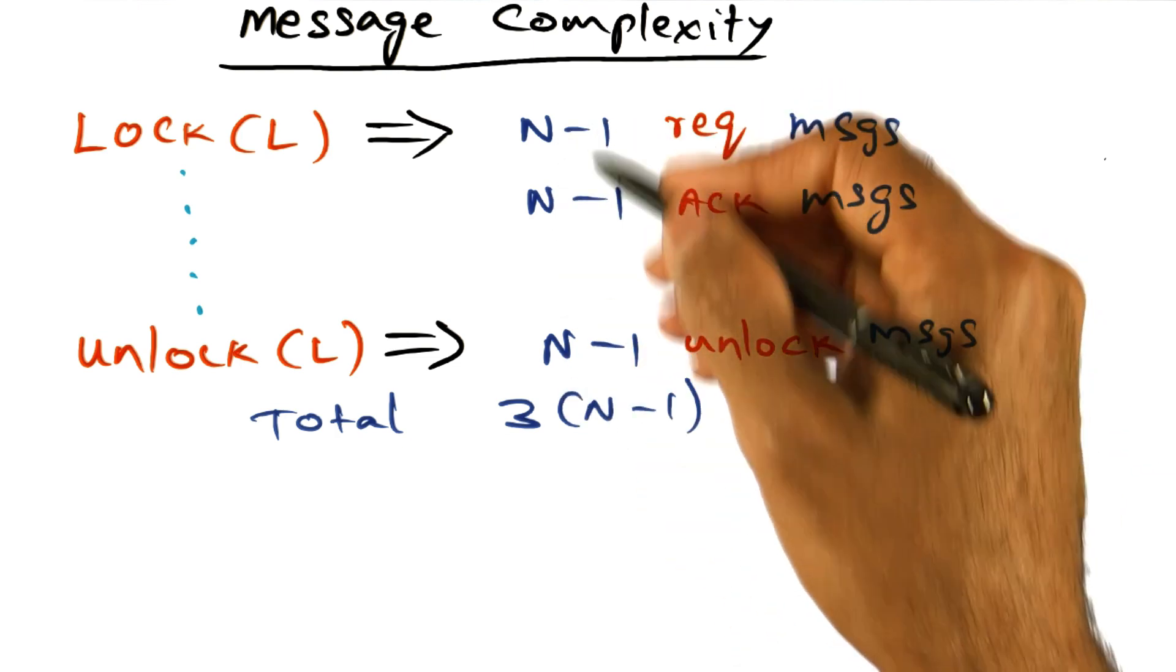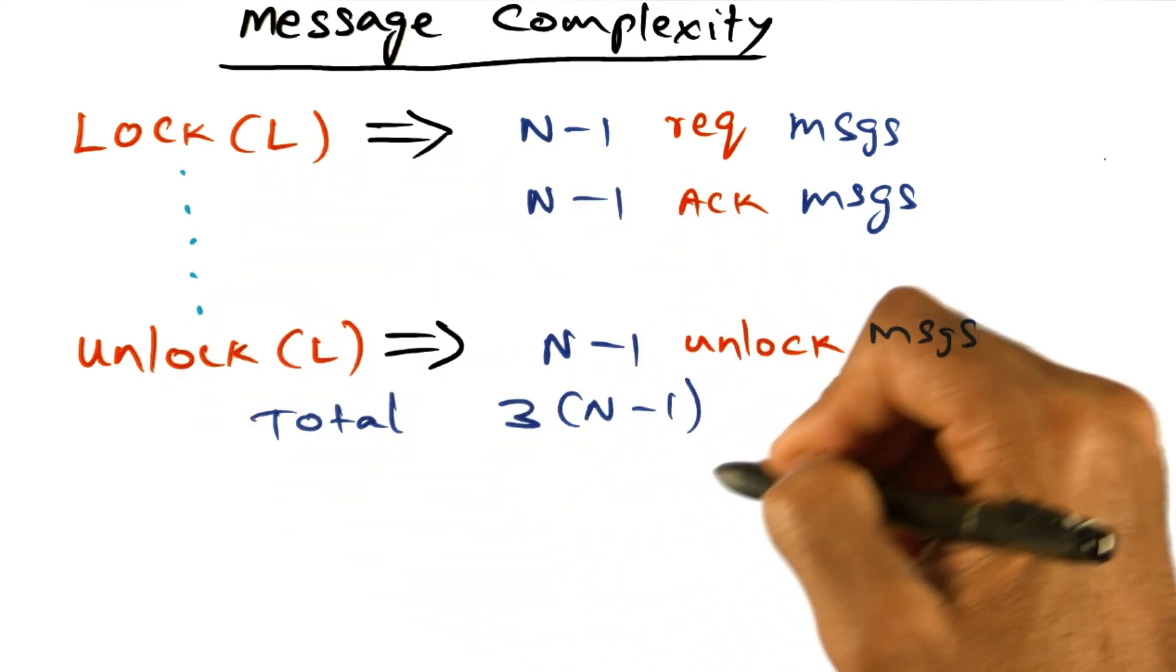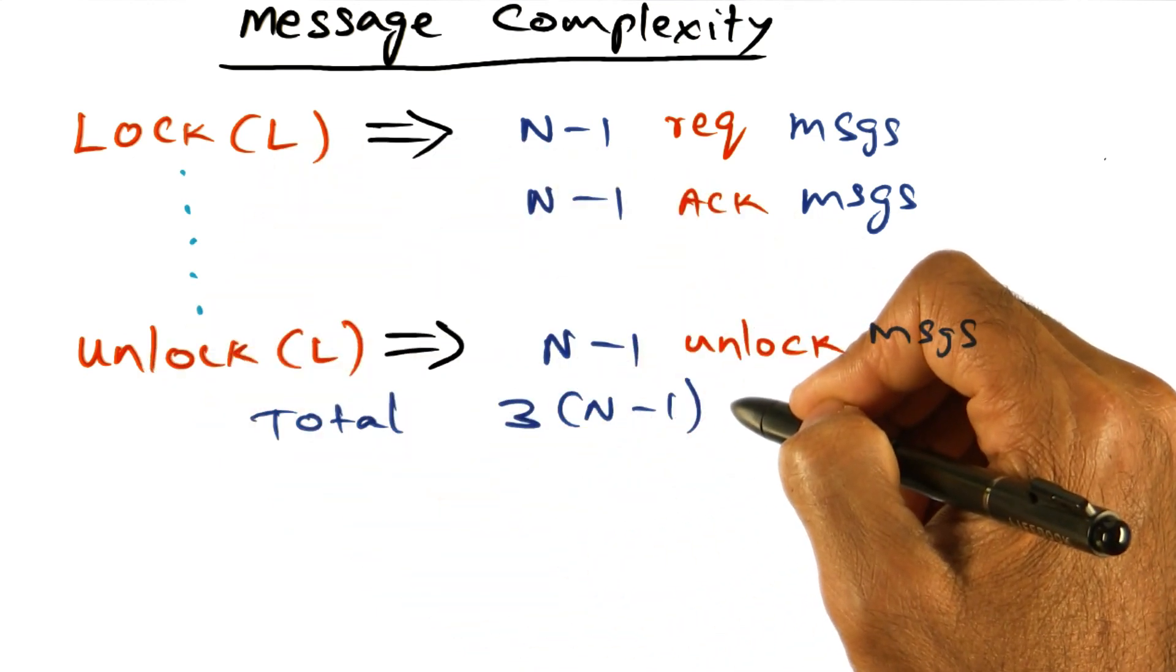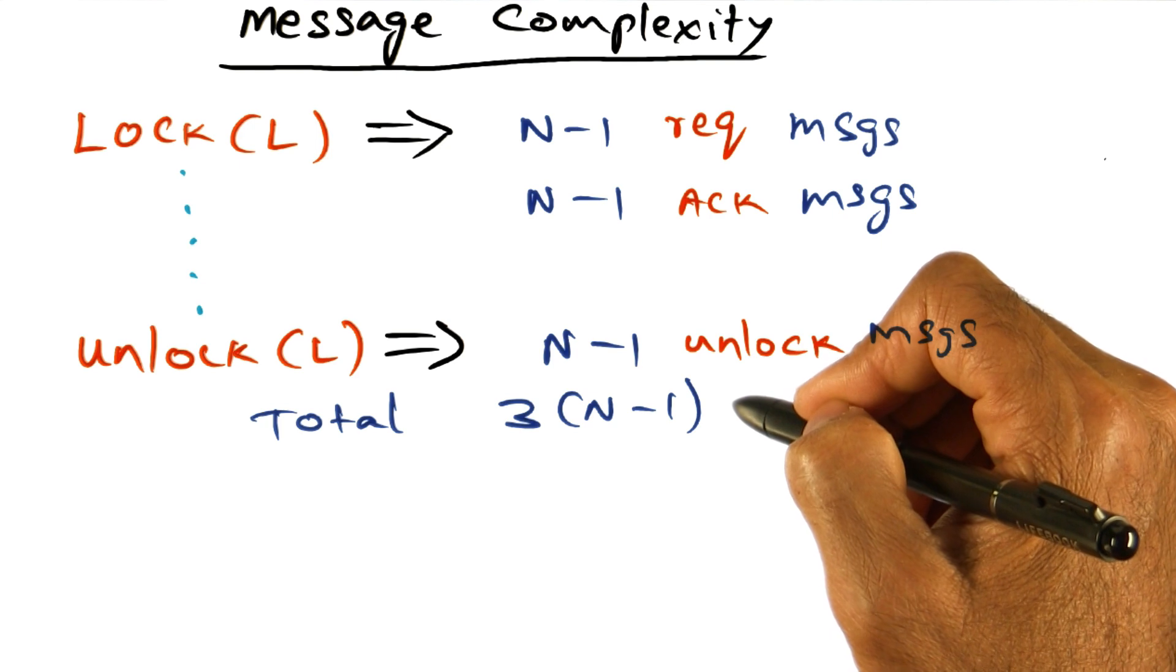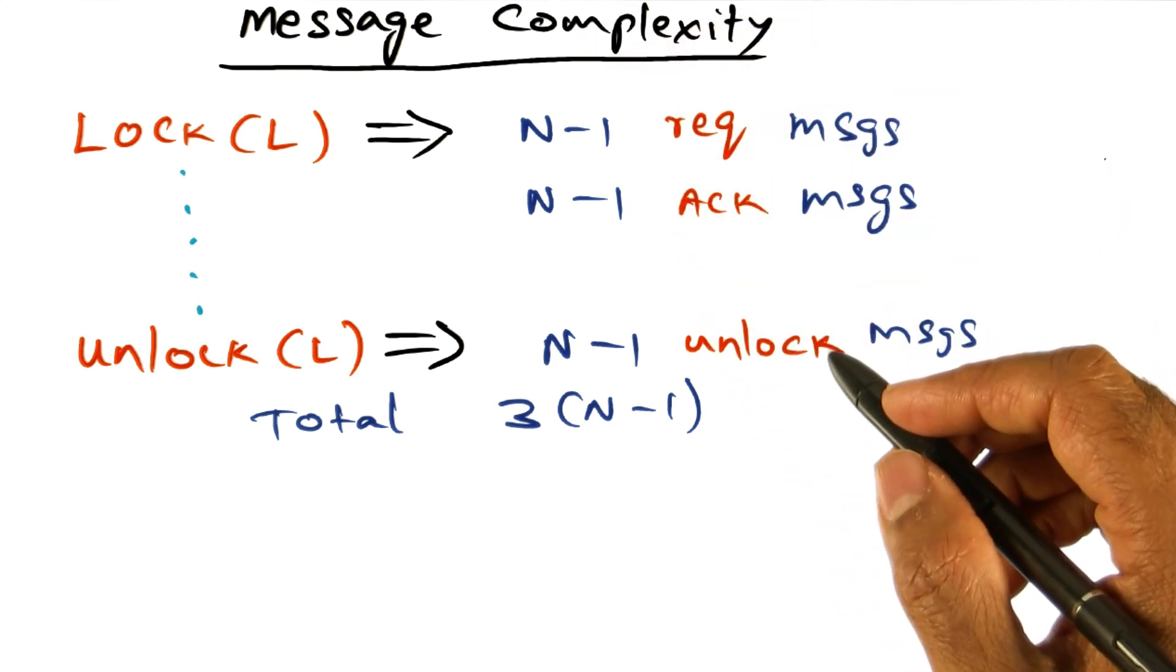And so if you count the number of messages that are involved in a lock plus unlock, totally we have 3 times n minus 1. That's the total number of messages that are incurred. That is the messaging complexity of the distributed mutual exclusion lock algorithm.